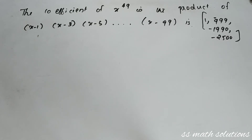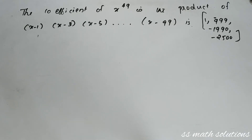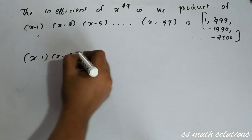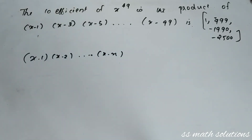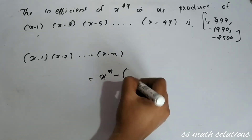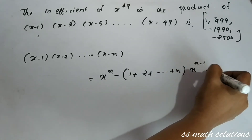Next question: the coefficient of x^49 in the product (x−1)(x−3)(x−5)···(x−99). Options are 1, −990, and −2500. We know the expansion of (x−1)(x−2)···(x−n) can be written as x^n minus (1+2+···+n)·x^(n−1) plus etc.